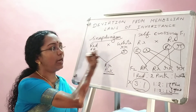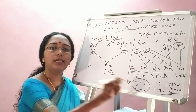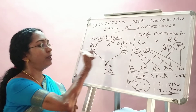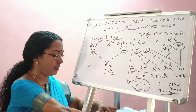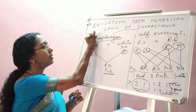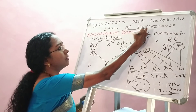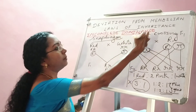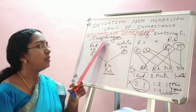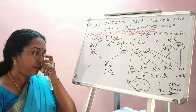So, snapdragon gives an example of deviation from Mendel's principle. Both phenotypic and genotypic ratios of the F2 generation are the same. We have to give a name for this kind of inheritance — it is not dominant inheritance, not recessive inheritance. This type of inheritance shown by snapdragon is called incomplete dominance. This is one deviation from Mendel's principle, in which phenotypic and genotypic ratios appear the same and deviate from the Mendelian ratio of 3:1.